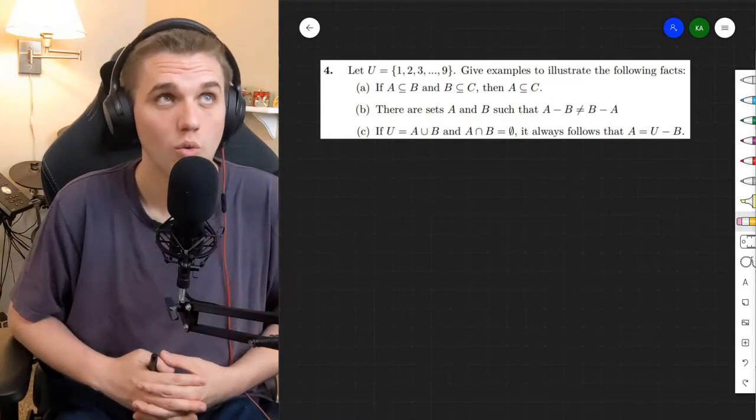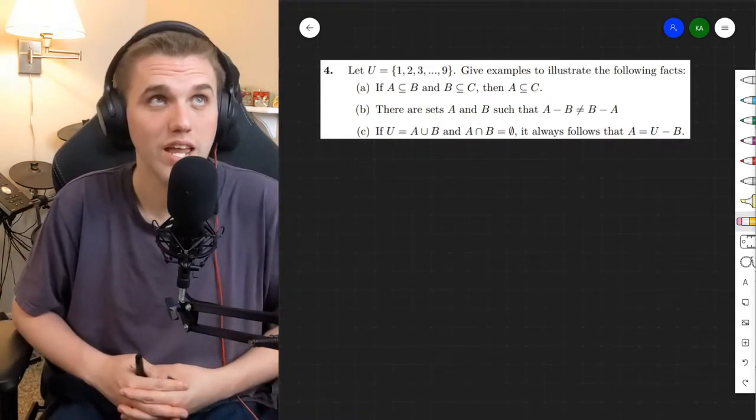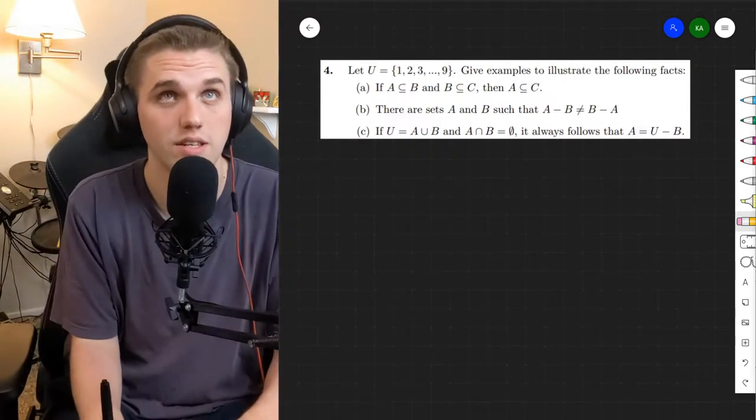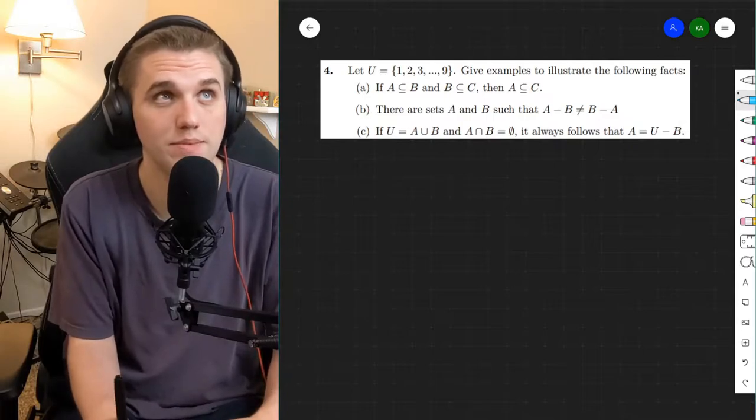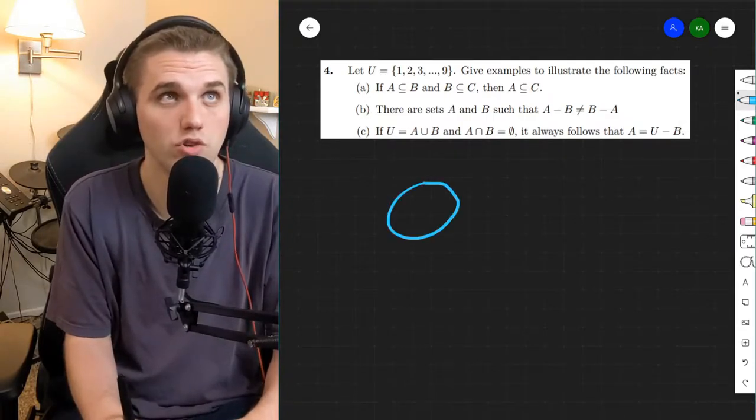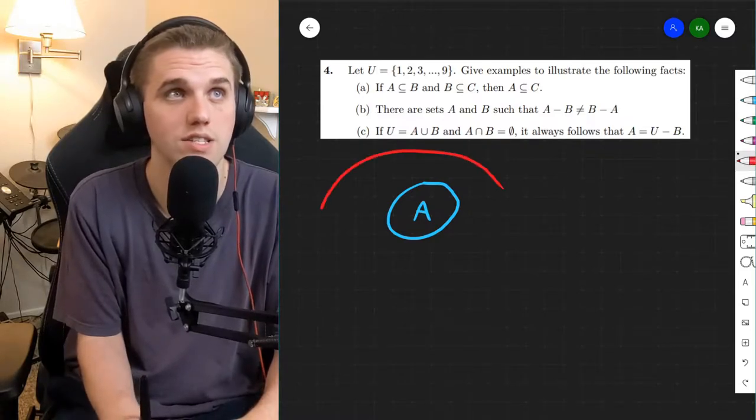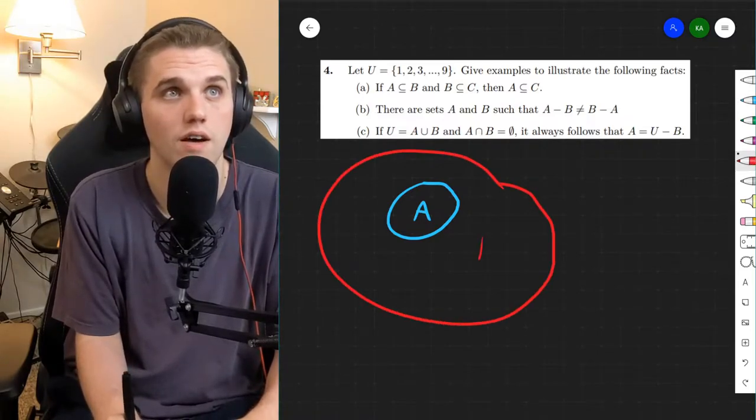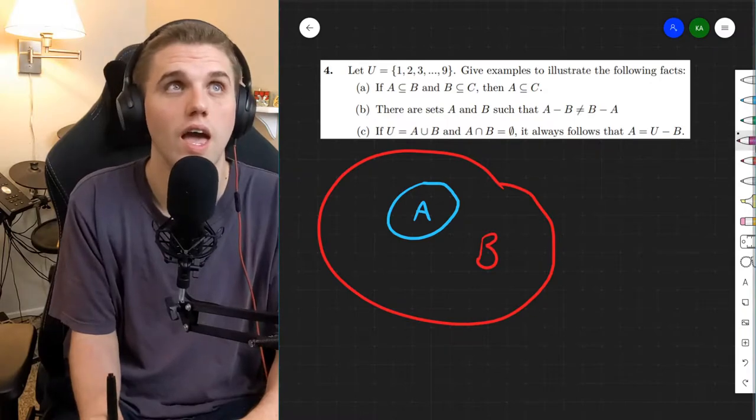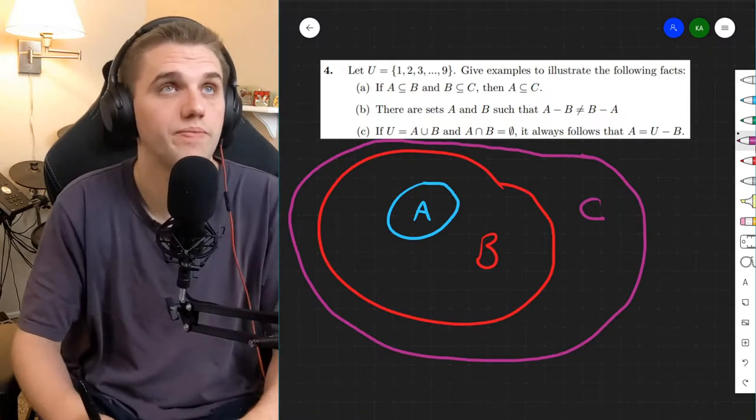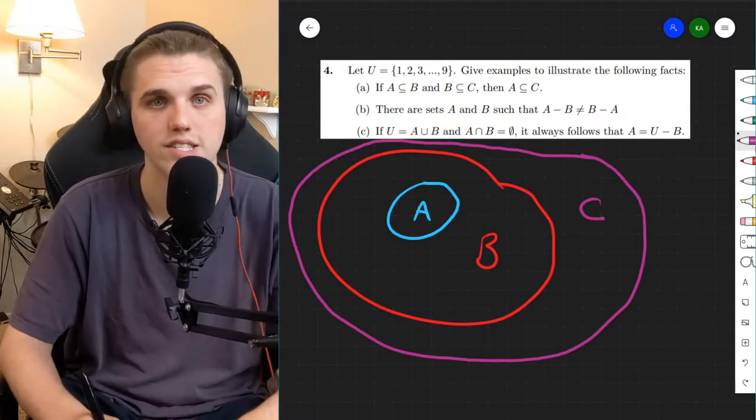So we're supposed to find examples that illustrate the fact that part A is if A is a subset of B. So visually, I'm going to show this. We have an A right here and A is a subset of B. And B is a subset of C. So B is inside C. Then A is inside C.